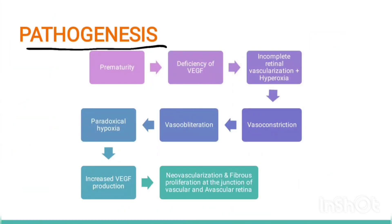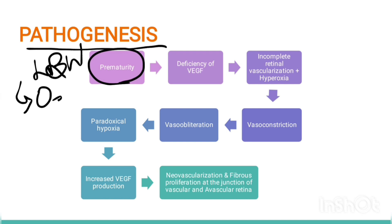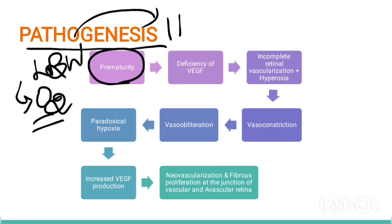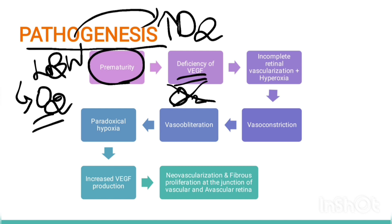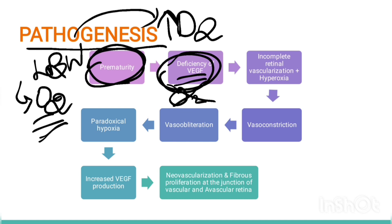Pathogenesis of ROP: Premature babies have low birth weight, so we supply them with oxygen, creating a hyperoxic condition. With increased O2, there is deficient VEGF. Normally VEGF is produced in hypoxic conditions, but since we are making it hyperoxic, VEGF becomes deficient, leading to incomplete retinal vascularization.